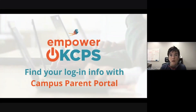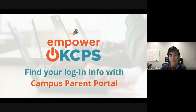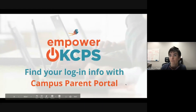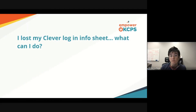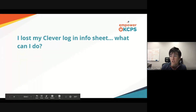This quick video will help you find your child's login information for Clever and for Canvas, the learning management system for Oklahoma City Public Schools, using your Campus Parent Portal. If you've lost your Clever login information sheet that you received when you picked up your device, it's actually really easy to find the information that you need in your Campus Parent Portal.